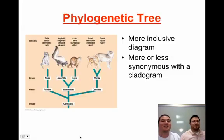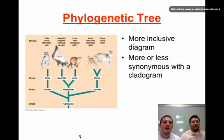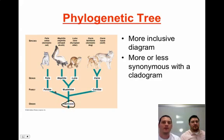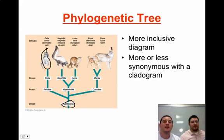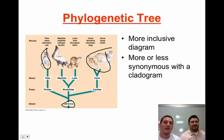A phylogenetic tree is a more inclusive diagram than a cladogram. It shows branchings: we start with the Carnivora, which branches into three families — the felines, the mustelids, and the canines or dogs. The key insight is that a cat and a dog have the least in common with each other. Dogs and otters actually have more in common than a cat and a dog, and the skunk and the otter have the most in common.